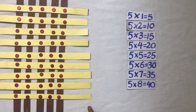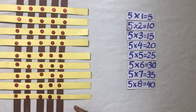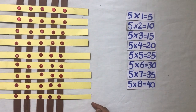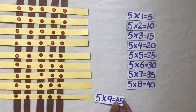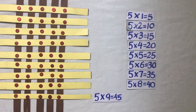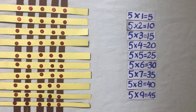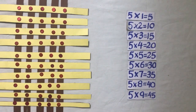By placing another horizontal strip with five intersecting points, we get forty-five intersecting points — that means five nines are forty-five. By placing another horizontal strip with five more intersecting points, we get fifty intersecting points. That means five tens are fifty.